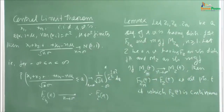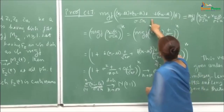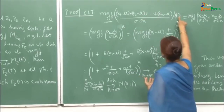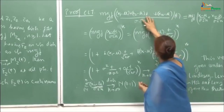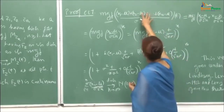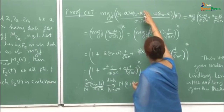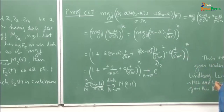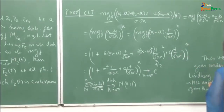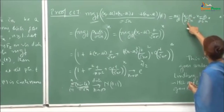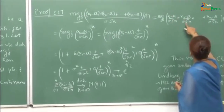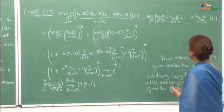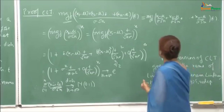This can be written as E[exp(t · (x₁ − μ)/(σ√n) + (x₂ − μ)/(σ√n) + ...)]. Since x₁, x₂, ..., xₙ are identically distributed and independent random variables, the MGF here, by the property of the MGF of independent random variables, factors into a product.